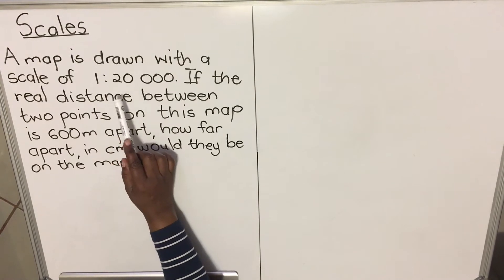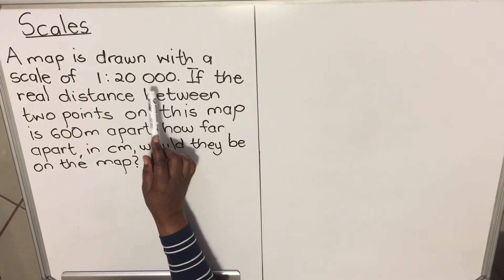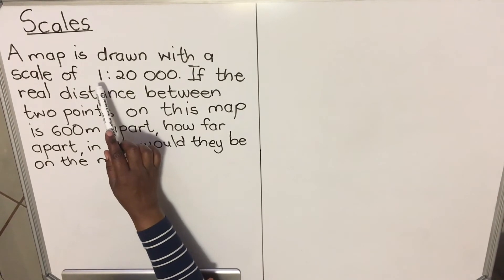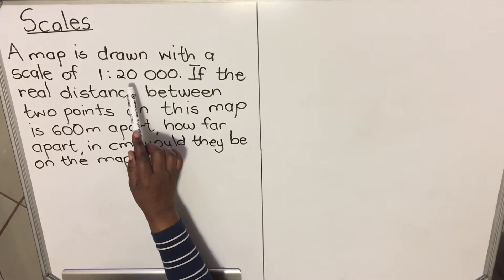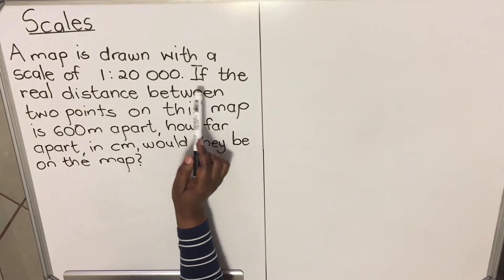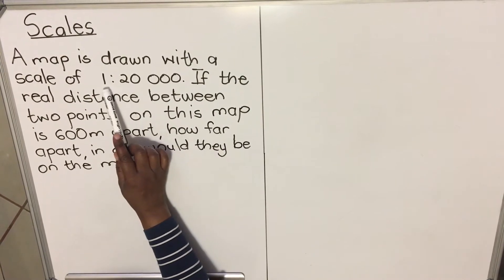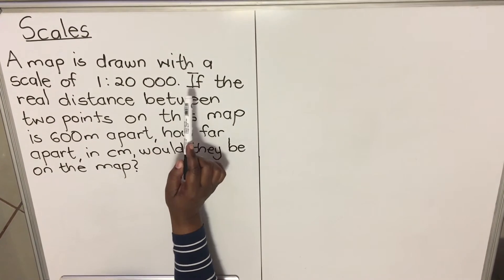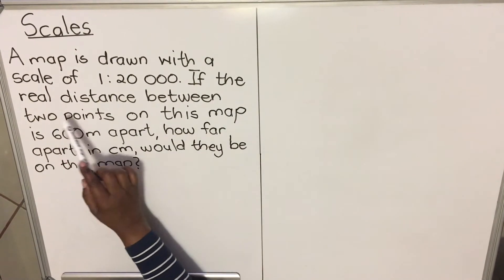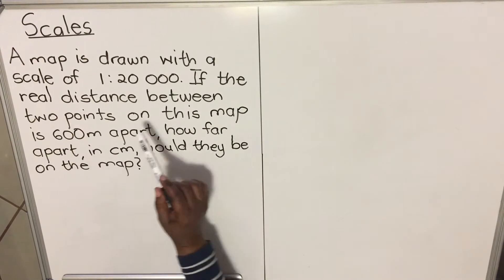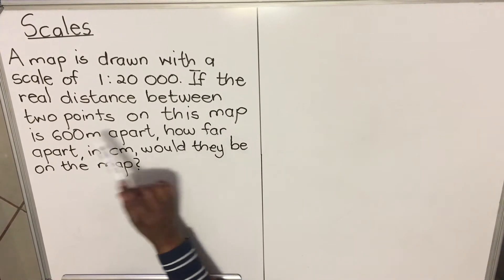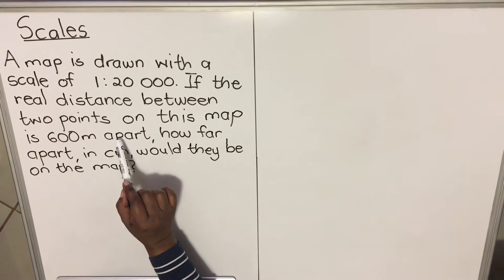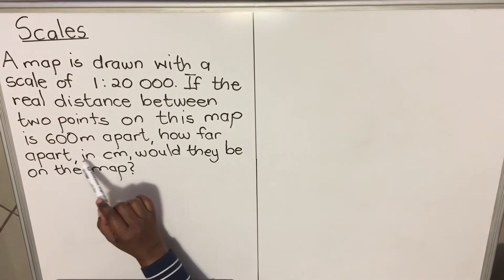This scale compares units — whatever you have one of on the map will equal 20,000 of the other on the ground. So 1 on the map equals 20,000 on the ground. If the real distance between two points is 600 meters apart,